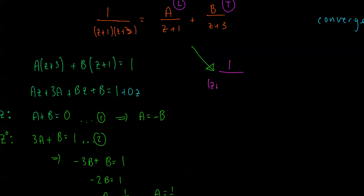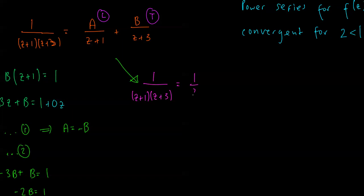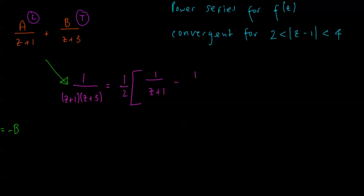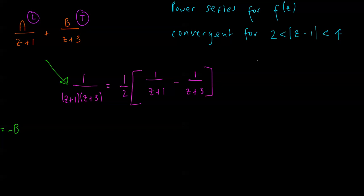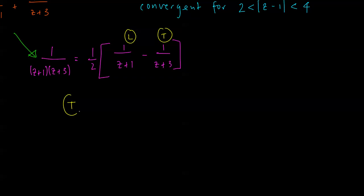So 1 / [(z+1)(z+3)] equals (1/2) · [1/(z+1)] − (1/2) · [1/(z+3)]. Going back to our graph, the z+1 term needs a Laurent series, and the z+3 term needs a Taylor series.